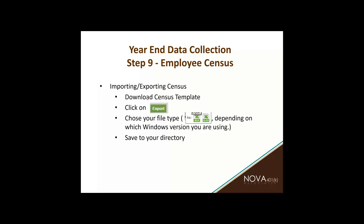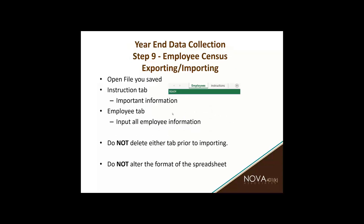To export and import the census template file in Excel format, click on the export tab. There are two different Excel versions you can choose from depending on which Windows version you're using. Save it to your directory and then start entering information. Once you've saved it to your computer, you can open that file and you will see two worksheets — one with employees and one with instructions. Do not delete, rearrange, or rename either worksheet tab. If you do any of those things, you will not be able to import it back into the Plan Sponsor Link system.